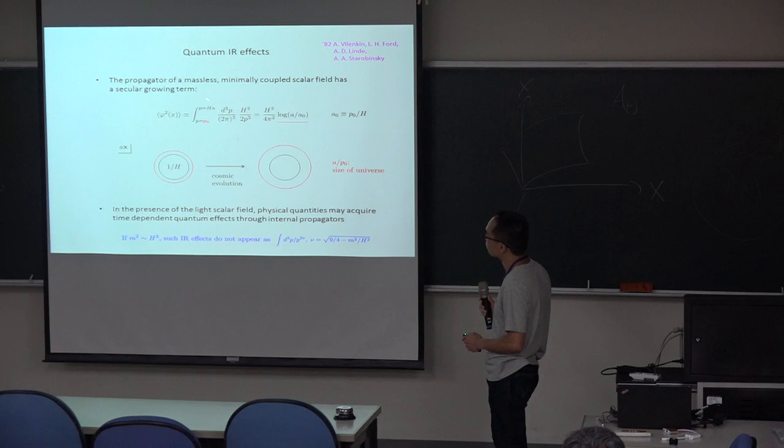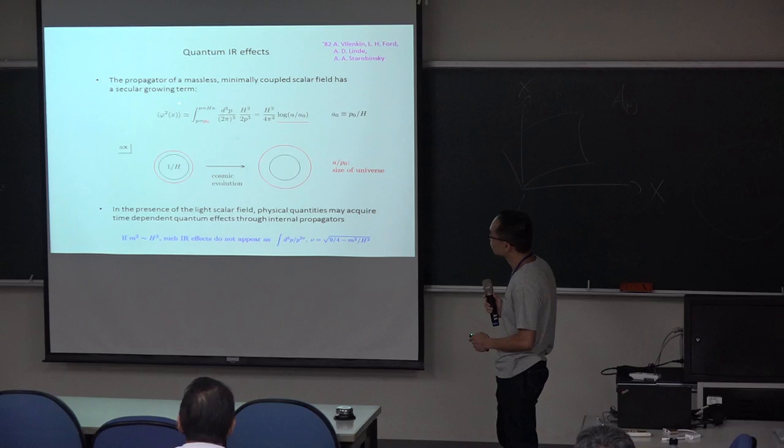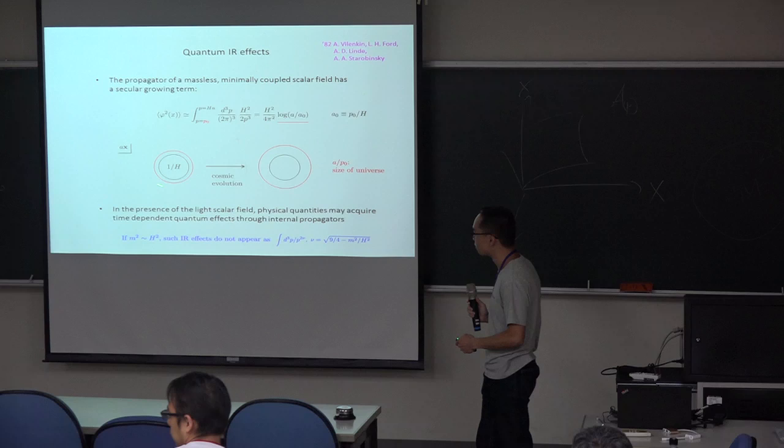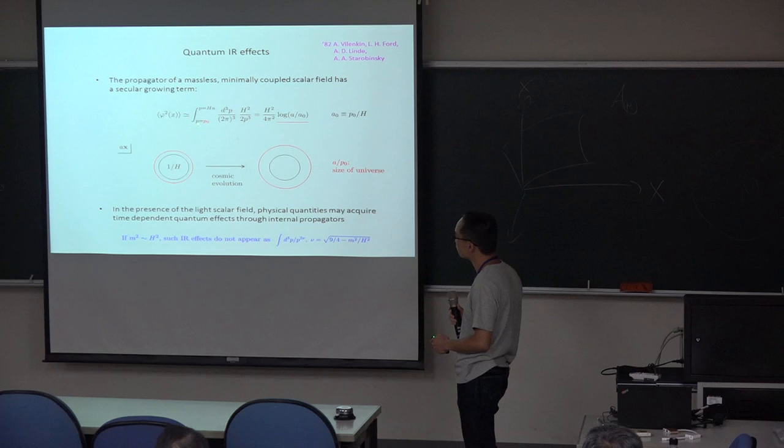In terms of the physical coordinate system, the upper bound as I said is the upper scale, the size of the horizon. Since now we are considering the de Sitter space, the upper scale is just constant. It does not change with time. On the other hand, the lower bound corresponds to the size of the universe. It expands by the scale factor.